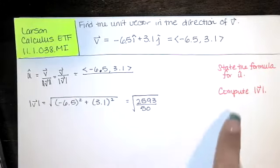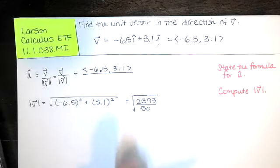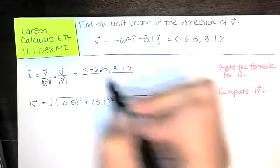Now, at this point, we've got the magnitude of V. It's right here. And then we've got the vector V itself right there. So we're going to take this guy and we'll divide by this guy.